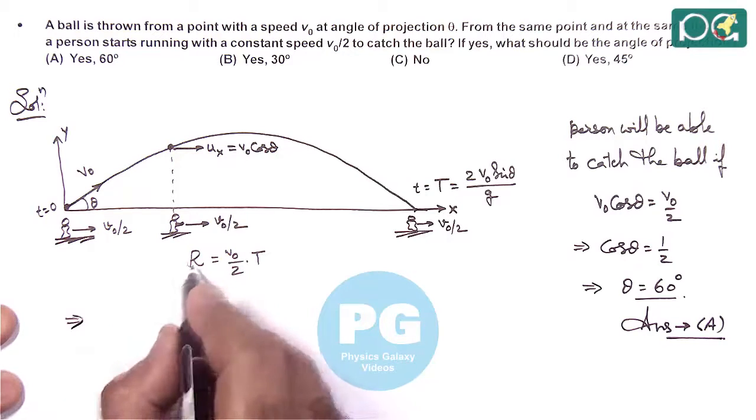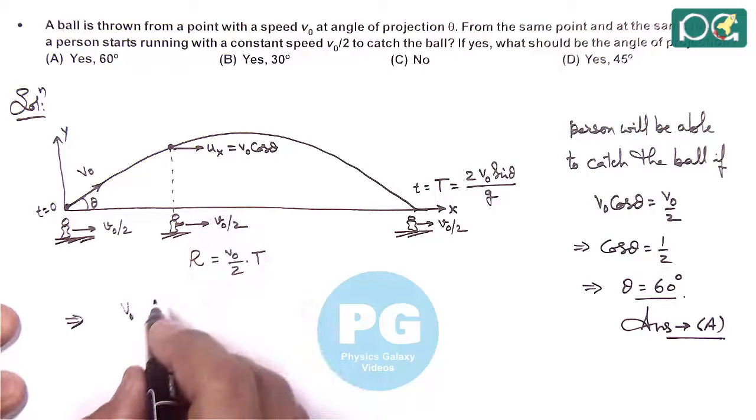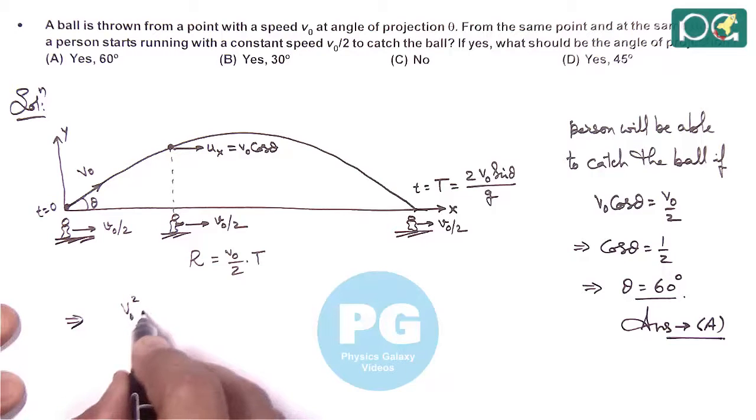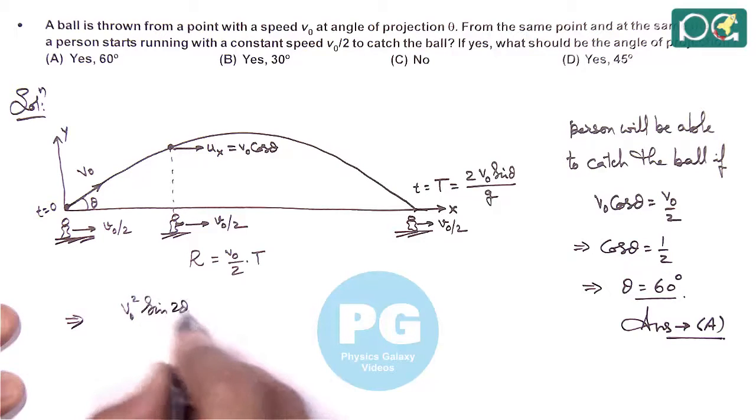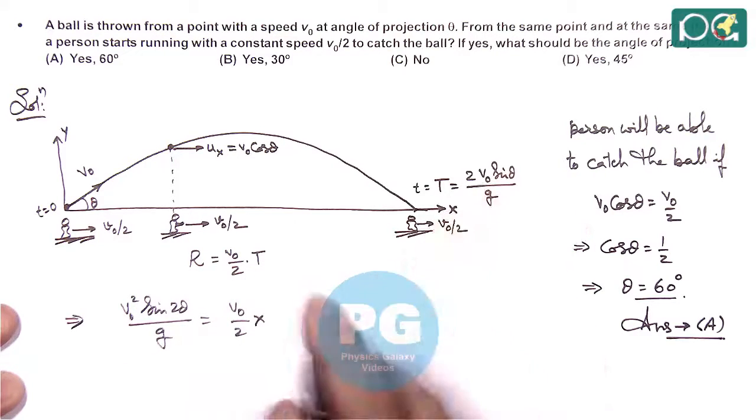The formula for horizontal range is u square sin 2 theta by g. So it is V-naught square sin 2 theta by g should equal V-naught by 2 multiplied by the time of flight, which is 2 V-naught sin theta by g.